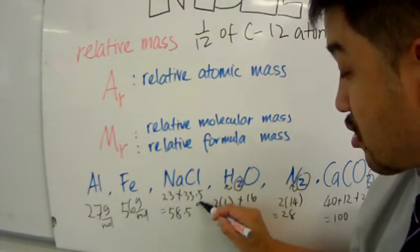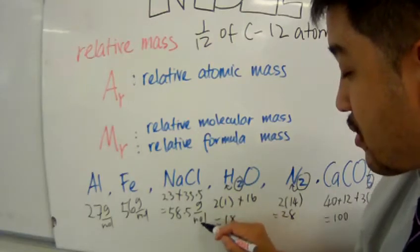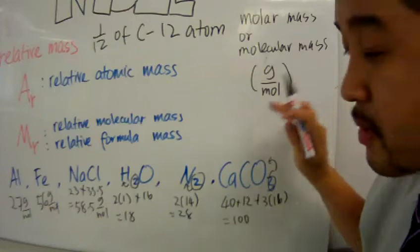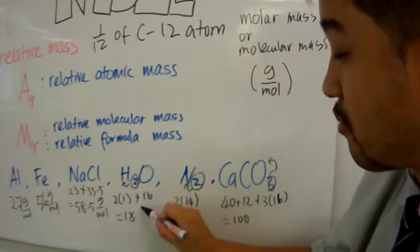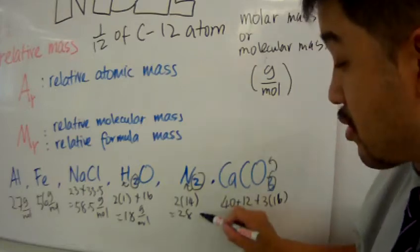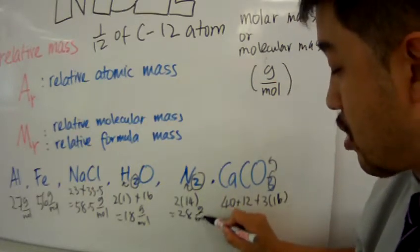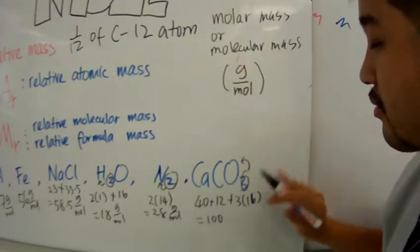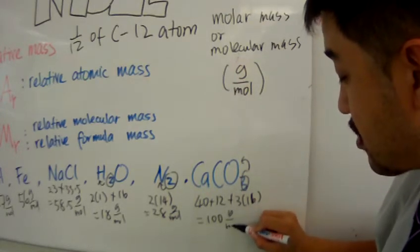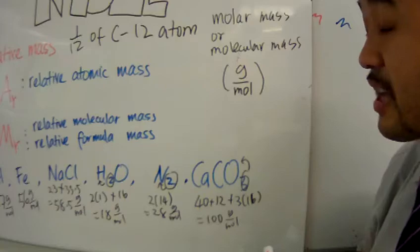And for sodium chloride, it would be 58.5 grams per mole. The molar mass of nitrogen will be 28 grams per mole. And the molar mass of calcium carbonate will be 100 grams per mole. Now, there you go.